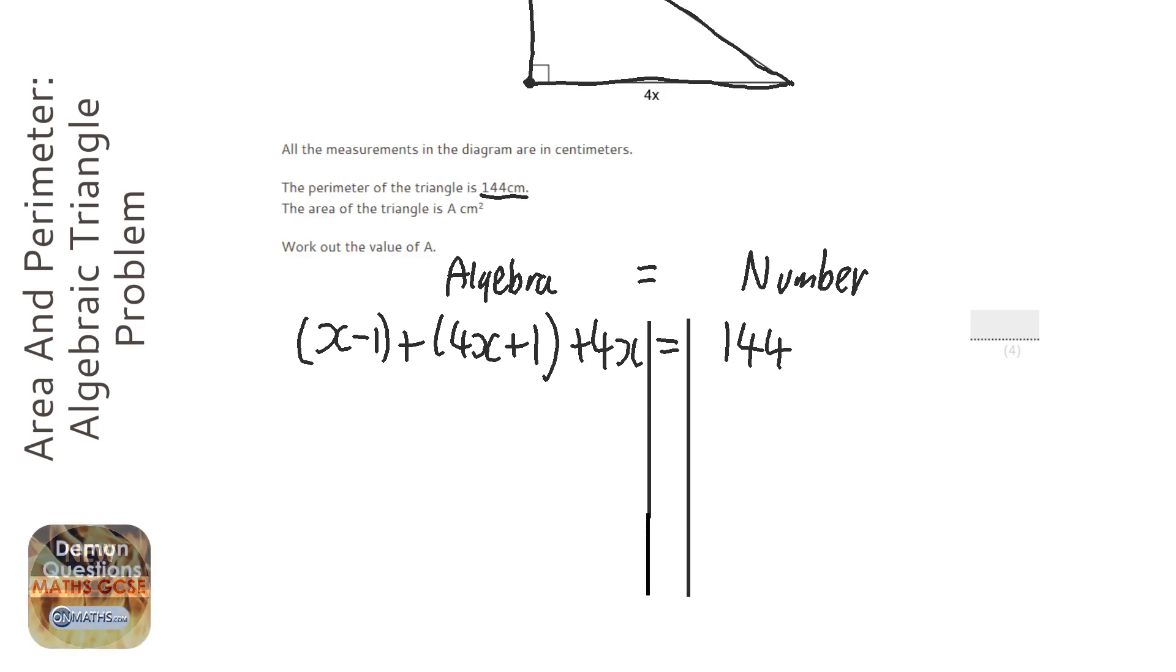We're going to collect the like terms on the left hand side. We've got x plus 4x plus 4x which will be 9x. Then we've got minus 1 plus 1, that's nothing, so it's just 9x equals 144.